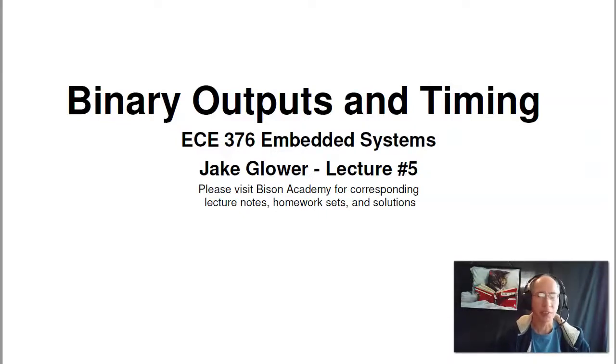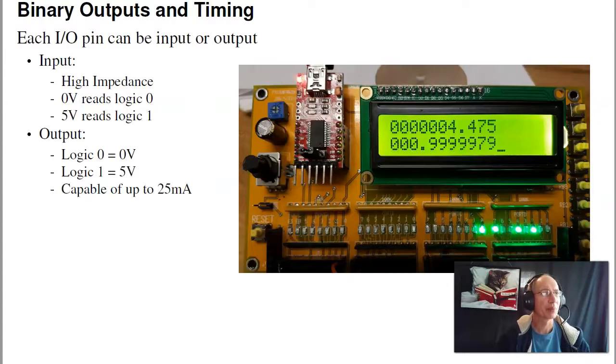Welcome to ECE 376, lecture number 5, Binary Outputs and Timing. What we looked at in our last lecture was how to get binary inputs to the processor. With that, I can count how many times you hit a button, how many times the light goes on, how many times the temperature passes below 20 degrees Celsius.